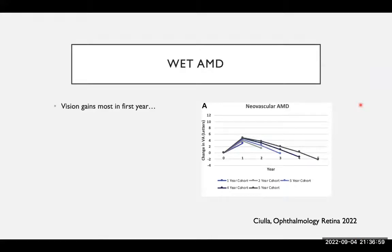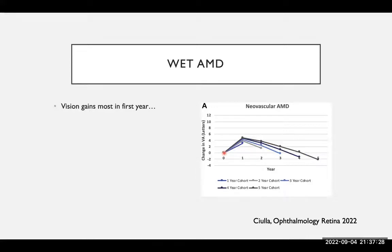The visual gains are greatest in the first year, but over subsequent years this vision improvement slows down and can in fact deteriorate to below where it started. So although the gains are great in the first few years, in the long term the vision may still deteriorate in wet macular degeneration despite treatment — and that is important to remember.